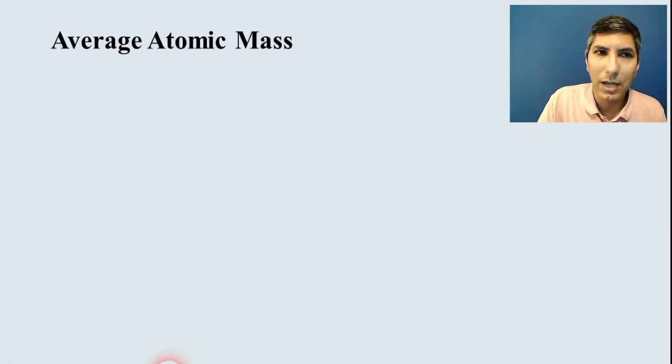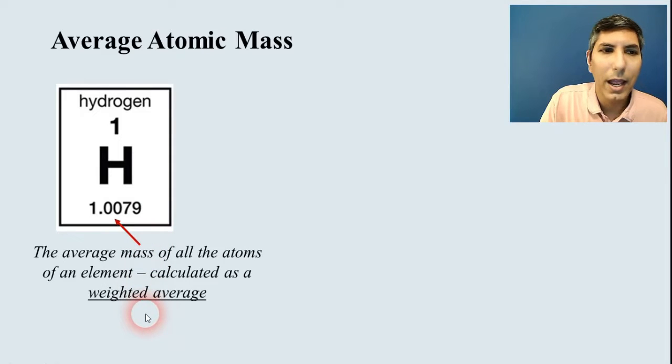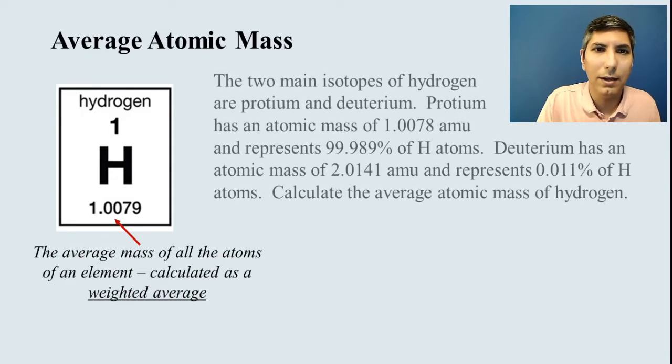When we talk about average atomic mass, we might wonder how we get that number. Where does the 1.0079 come from? Well, it comes from a weighted average, an average mass of all the atoms of that element. Now, let me show you how we calculate that.